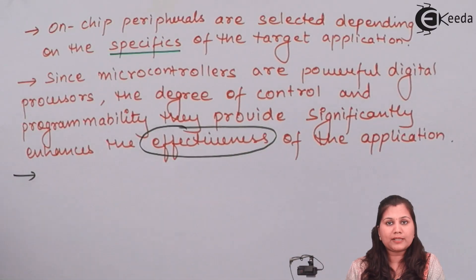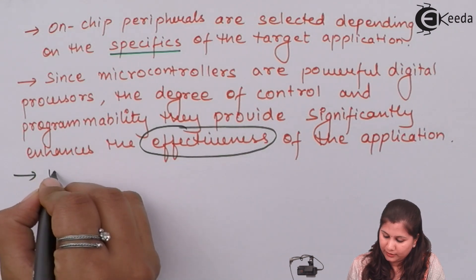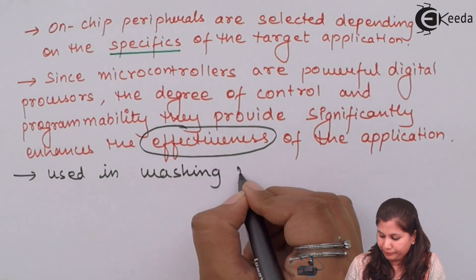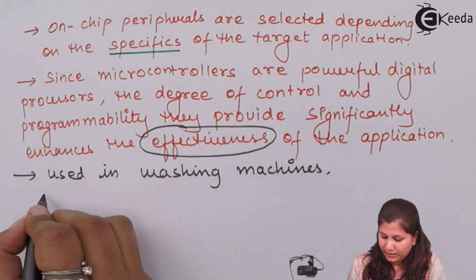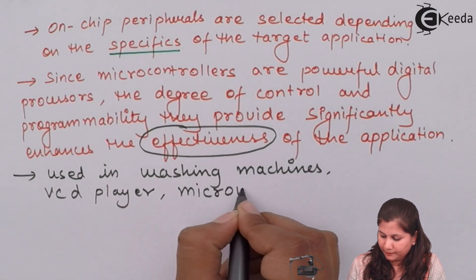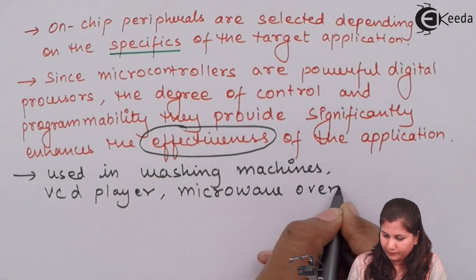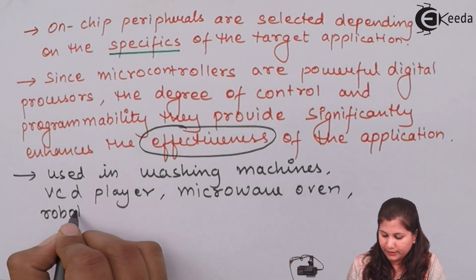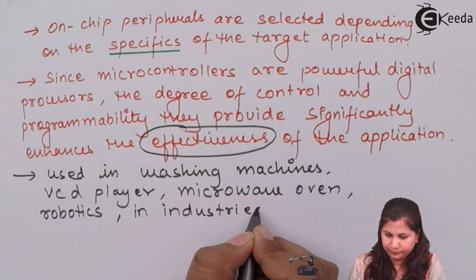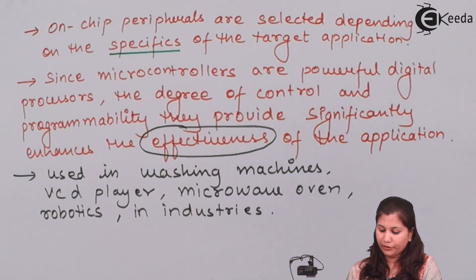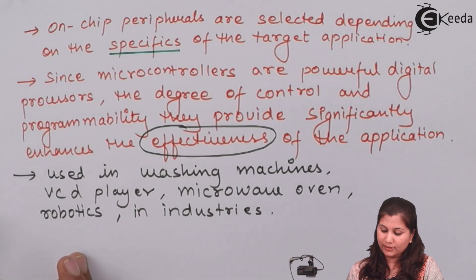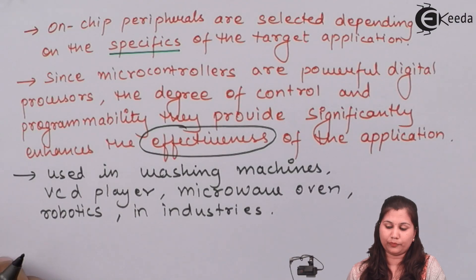Different applications of microcontrollers include washing machines, VCD players, microwave ovens, robotics, and industrial applications. So microcontrollers find use in the robotic field as well as the industrial field.